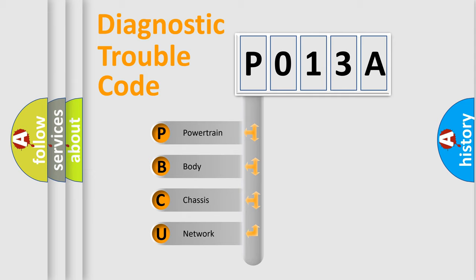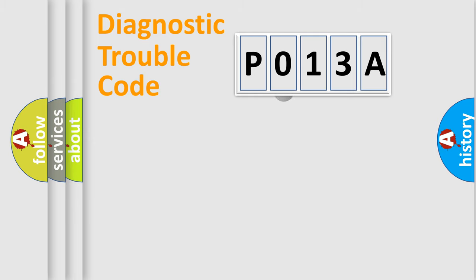We divide the electric system of automobile into four basic units: Powertrain, Body, Chassis, Network. This distribution is defined in the first character code.